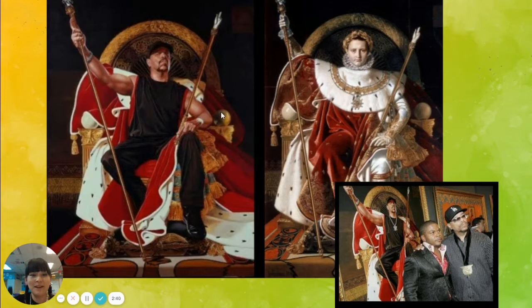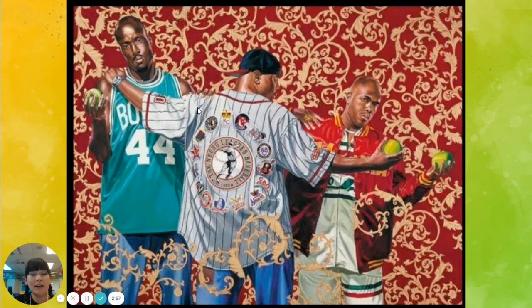A lot of times Kahinde Wiley will find models on the streets of New York. He would just walk down the street and find people that he thought were interesting and ask them to become models. So these people are not specifically famous — they're just regular people that live in New York.